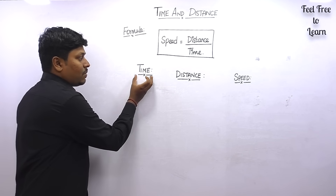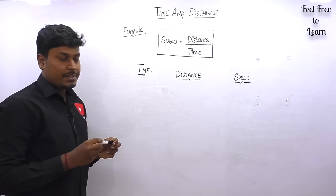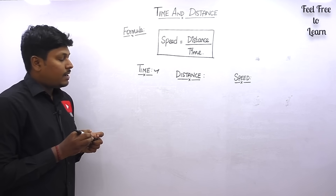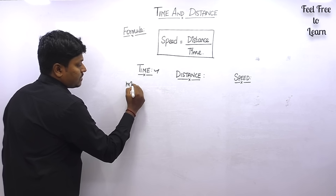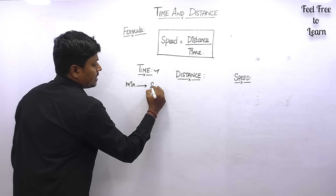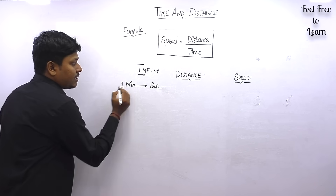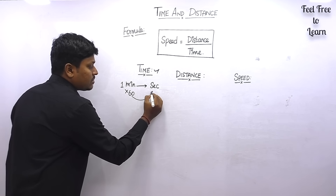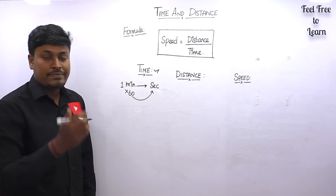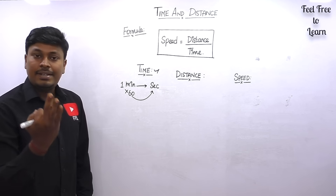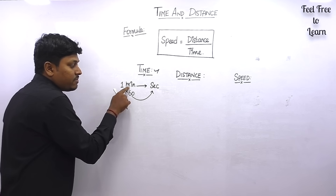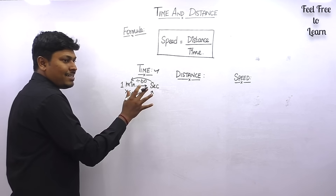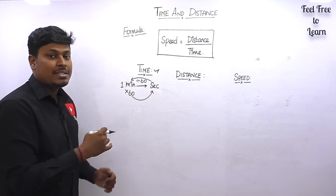Let me discuss the concepts of time, distance, and speed. First, time conversions: to convert minutes to seconds, multiply by 60 — so 1 minute is 60 seconds, 2 minutes is 120 seconds, 3 minutes is 180 seconds. Conversion of minutes to seconds: multiply by 60. Converting seconds to minutes: divide by 60.